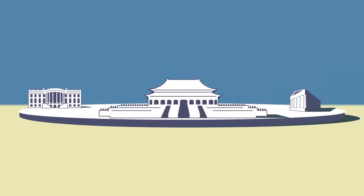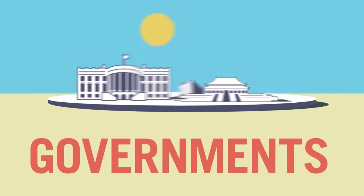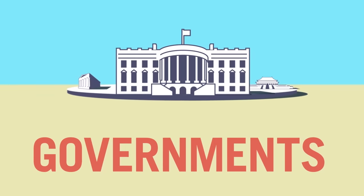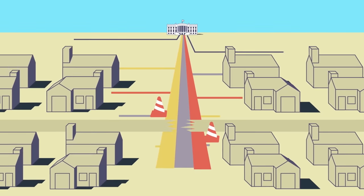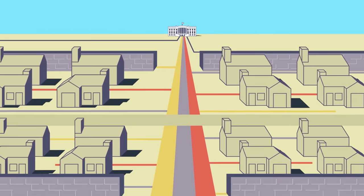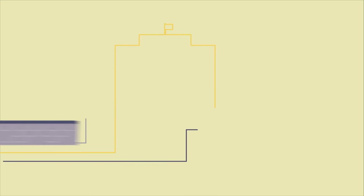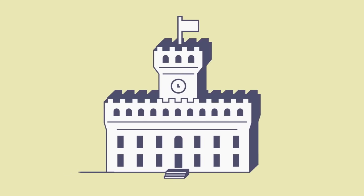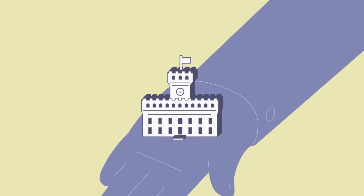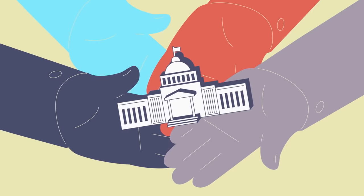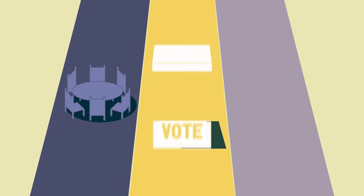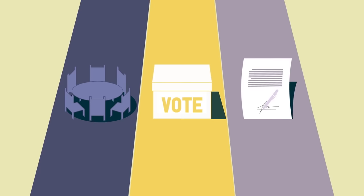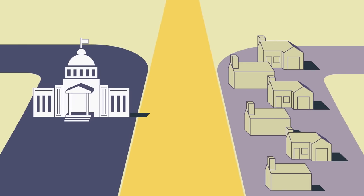For thousands of years, people have been ruled by governments. These bodies of power make rules that organize society and are meant to protect it from danger. Many different forms of government have taken shape, from structures where power is concentrated in the hands of one person to those where power is shared among many. These different systems, characterized by how many people are in charge, how they are chosen, and how they rule, have massive consequences for the relationship between governments and their people.